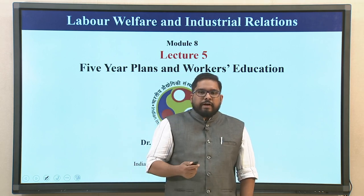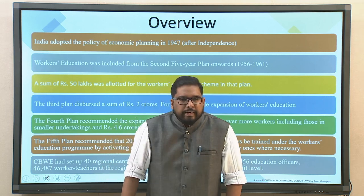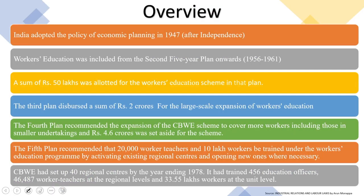When we look into the five year plans and workers education, we have to start from the scratch. India adopted the policy of economic planning specifically after independence in 1947. When you look into workers education, it almost started simultaneously — it was included from the second five year plan onwards, which is around 1956 to 1961. Initially a sum of rupees 50 lakhs was allotted for the workers education scheme in that plan.